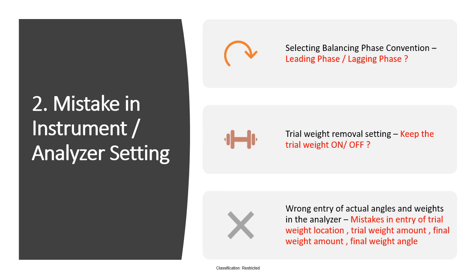Also critical is the correct entry of actual angles and weights in the analyzer. During startup of the balancing program, the trial weight location defaults to 0 degrees. Once you change the trial weight location from the reference point, you must enter the exact location and the exact amount of the trial weight, which also applies to the final weight amount and final weight angle.